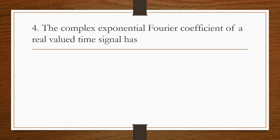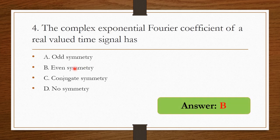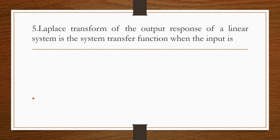The complex exponential Fourier coefficient of a real valued time signal has: odd symmetry, even symmetry, conjugate symmetry, or no symmetry. The complex exponential Fourier coefficient has conjugate symmetry. So option B is the right answer.